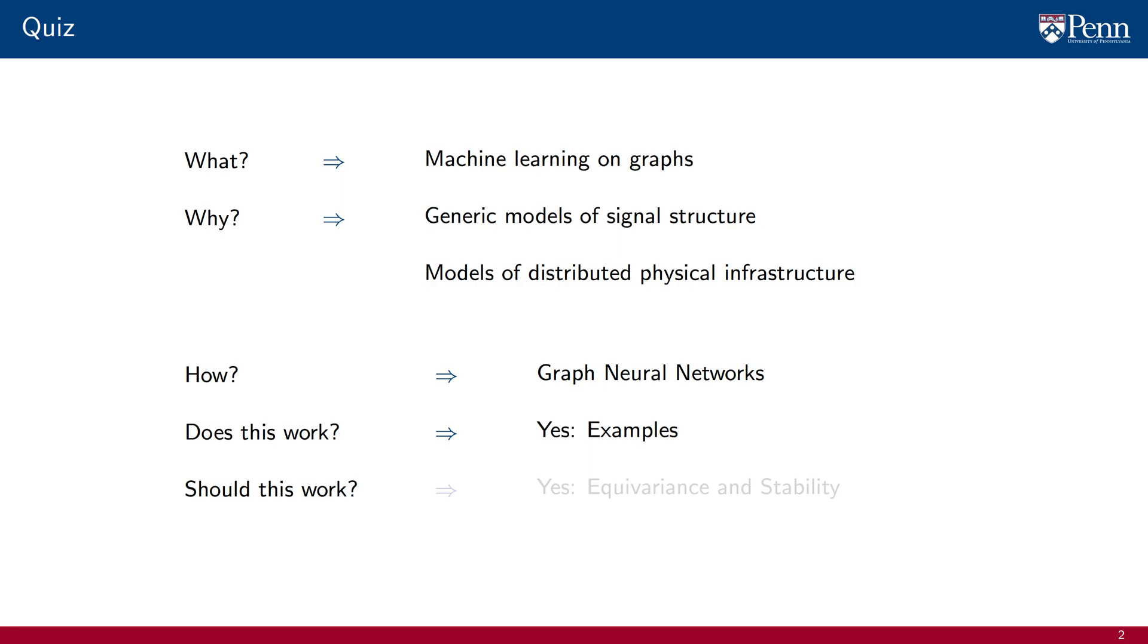But should this work? Should we expect GNNs to solve the problems they solve? Well, yes, we have offered theoretical explanations in the form of permutation equivariance and stability to deformations of the support. All of these answers are correct, but we can do better. Let us work together on a more detailed answer.